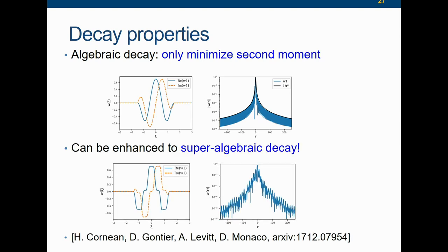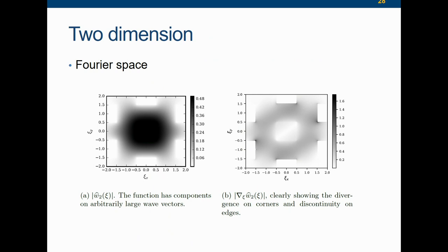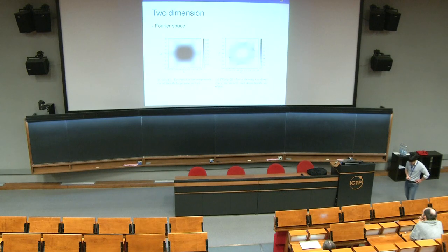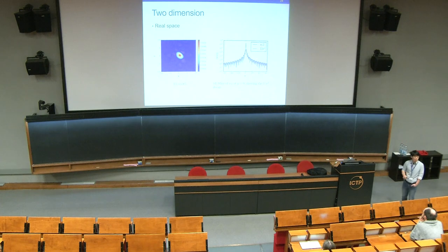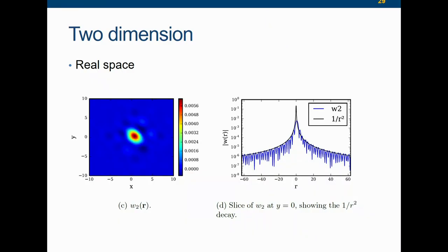Very recently, there's a mathematical understanding saying that if done correctly, you can at least get super-algebraic decay. We implemented this procedure, and by relaxing — not minimizing the spread but allowing it to be a little bit larger — this can be enhanced to super-algebraic decay. You can do this in 2D, where you see a very interesting non-trivial boundary shape due to the enforcement of the constraint — the frozen-band constraint. You still have the 1/r² decay if you minimize the spread.